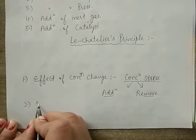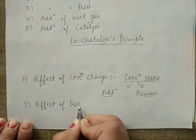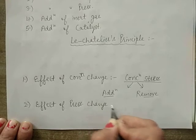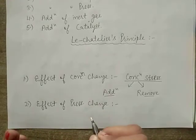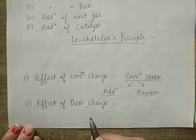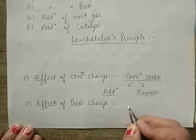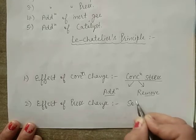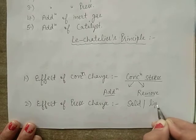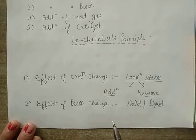The next factor is effect of pressure change. Pressure change is achieved by changing the volume of the system. It affects gaseous reactions because they have different numbers of moles of gaseous reactants and products. For solids and liquids, there is no effect since their volume is independent of pressure.